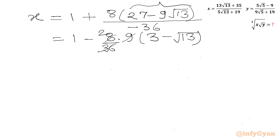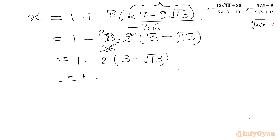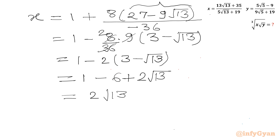It will leave 2 here. So I will write 1 minus 2(3 − √13), which gives 1 minus 6 plus 2√13. So it is converting into the simplified form 2√13 − 5. This is our x.